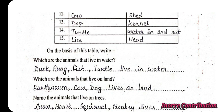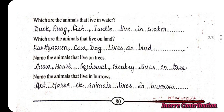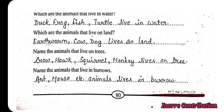On the basis of this table, which are the animals that live in water? Duck, frog, fish, and turtle live in water. Which are the animals that live on land? Earthworm, cow, and dog live on land. Name the animals that live on trees — crow, hawk, squirrel, and monkey live on trees.